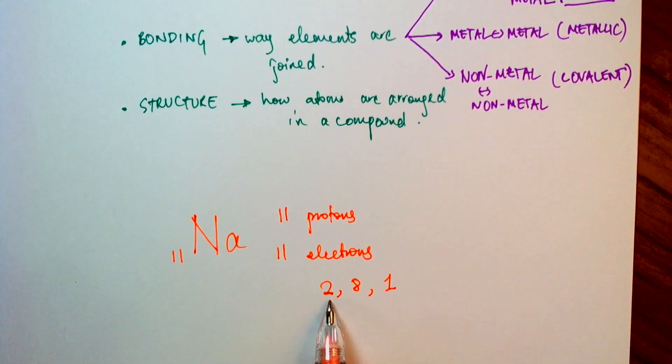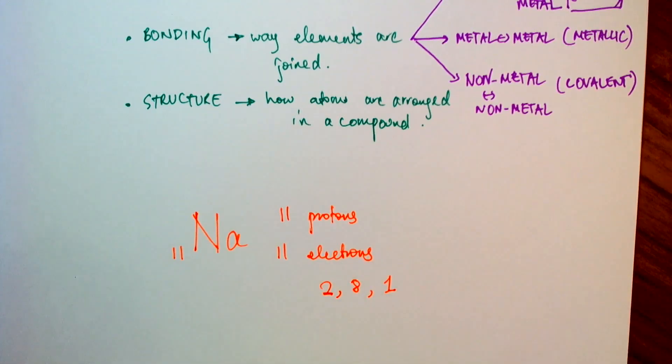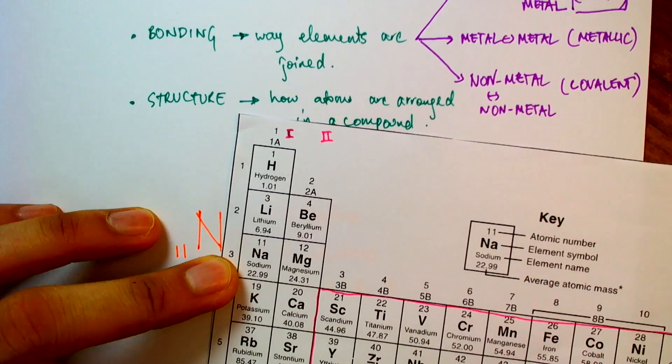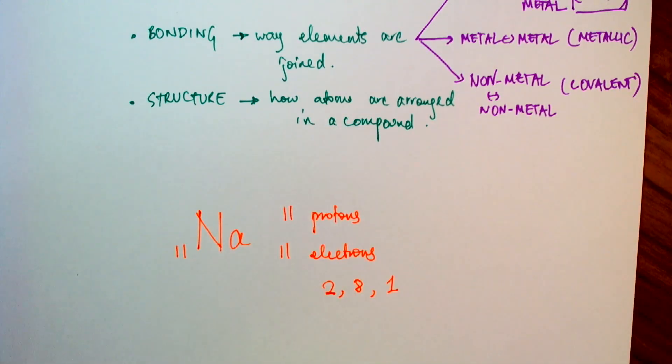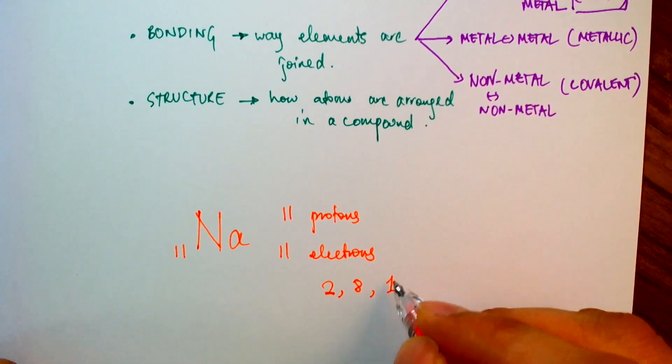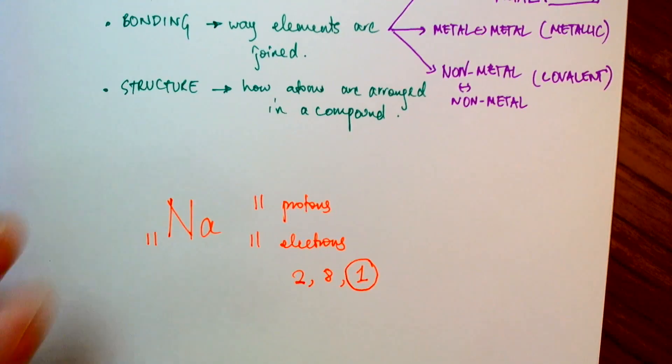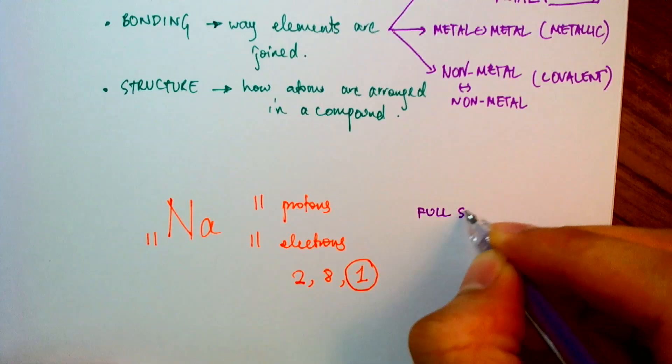So remember, the first shell can hold two electrons. Second shell, maximum of eight electrons. That leaves one electron left over for the valence shell. And indeed, sodium is in group 1, so we could have known how many electrons there are in the valence shell just by looking at a group number. And indeed, it does have one electron in the valence shell. Now, in order to get a full shell, there are two things that it can do.